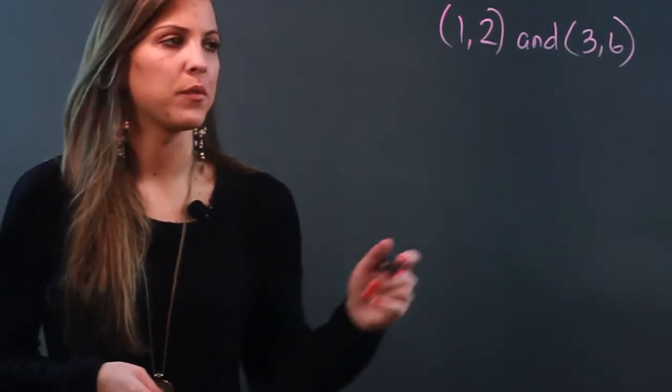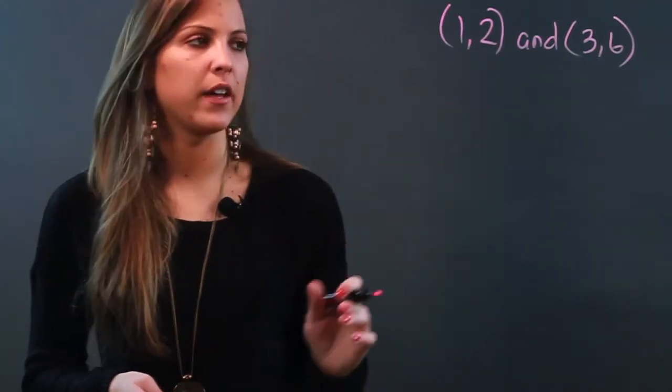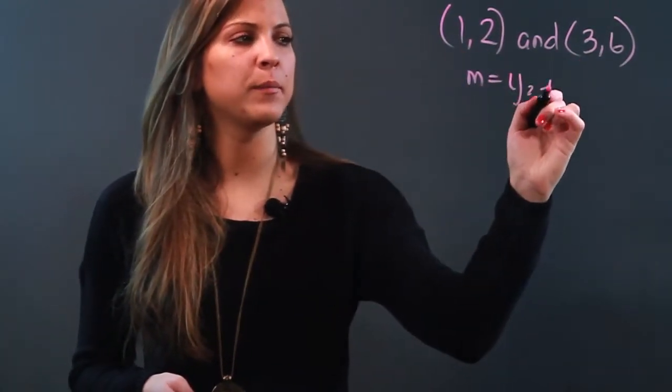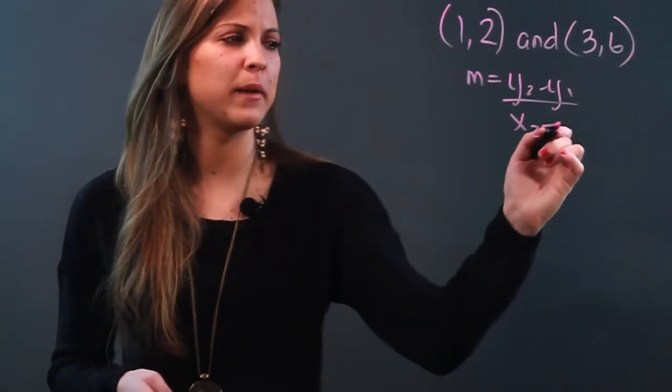First we need to find the slope, so we're going to use these two points to find our slope. Slope is always equal to y2 minus y1 over x2 minus x1.